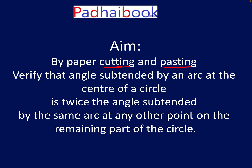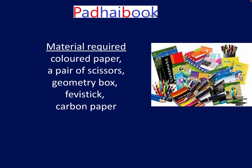Let's see the material required to perform this activity: colored paper, a pair of scissors, geometry box, Fevistik, and carbon paper or tracing paper — because in the end we are going to trace an angle and make replicas of it.